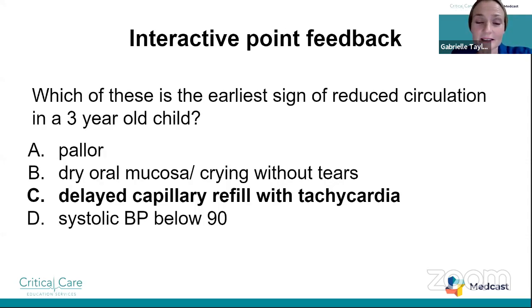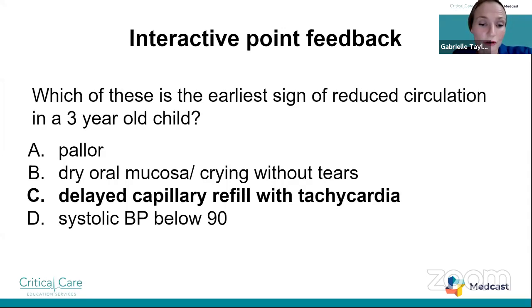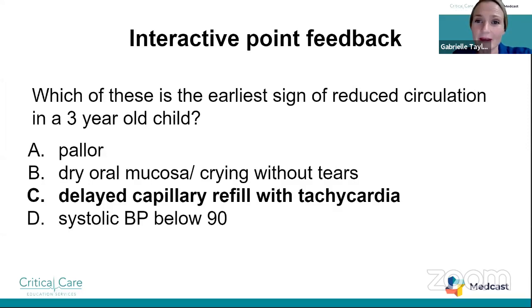If you don't have access to a vitals machine and find it difficult to palpate a pulse on a chubby child, perform a capillary refill. Hold it for the full five seconds, either in the middle of the forehead or on the sternum so you're taking a central capillary refill time — it should return within two to three seconds. Three seconds is considered slightly delayed and would be the earliest sign of circulatory compromise.